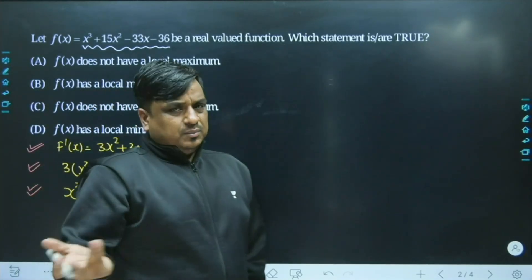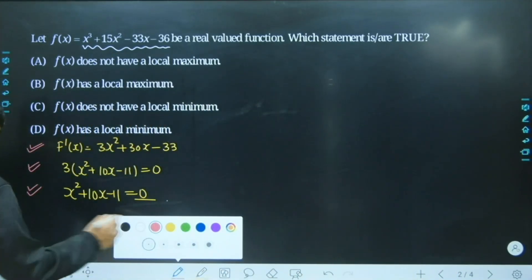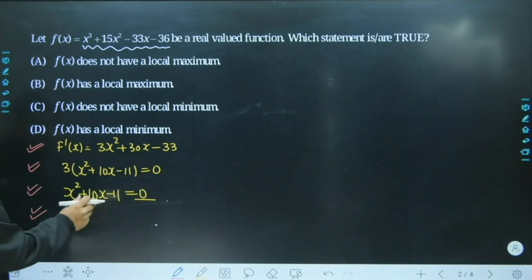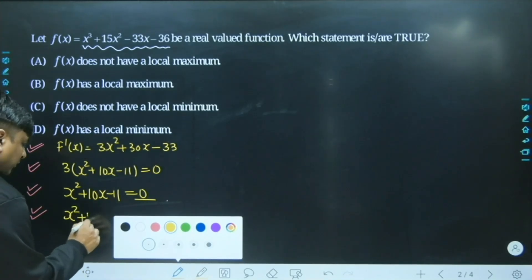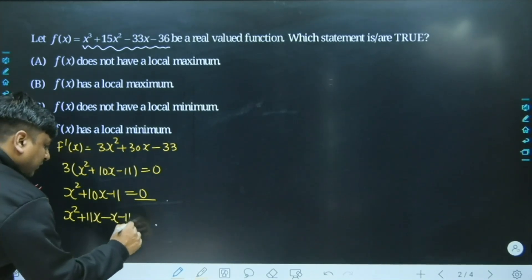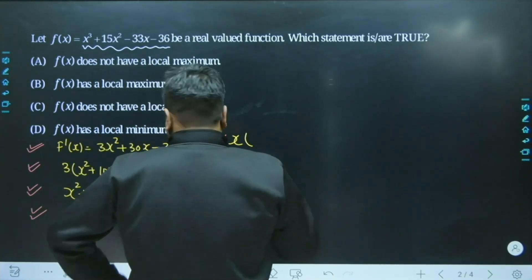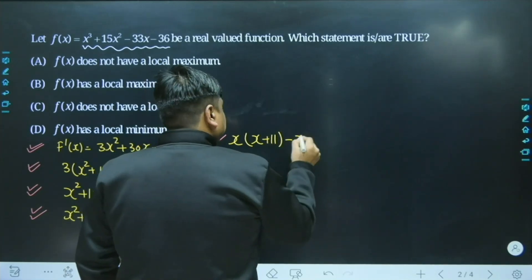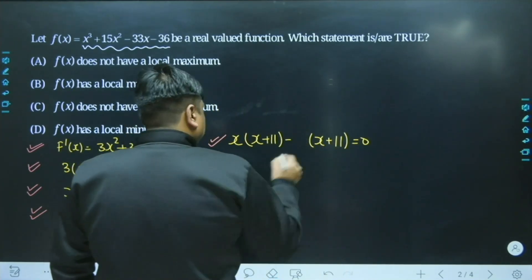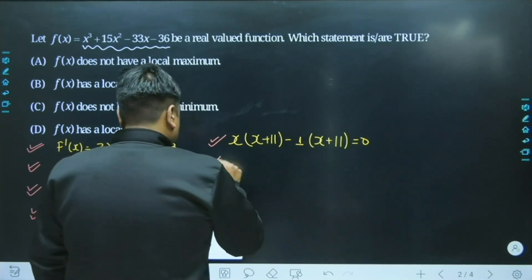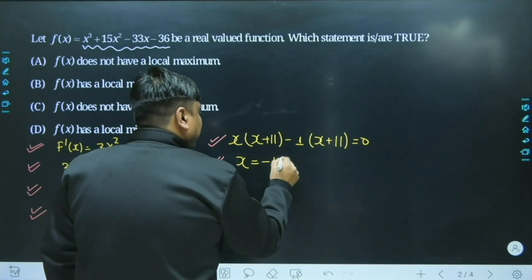Taking 3 as a common factor, we are left with x² + 10x - 11 = 0. We can find its roots by middle term split or through Sridharacharya's rule, but the middle term split is the better approach. We need two numbers whose sum is 10 and product is -11. Splitting gives us x² + 11x - x - 11 = 0, so x(x + 11) - 1(x + 11) = 0, yielding roots at x = -11 and x = +1.